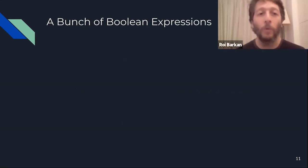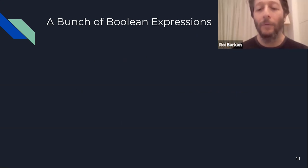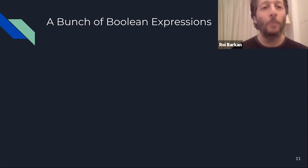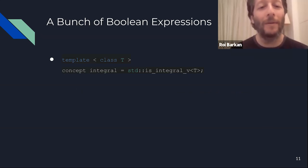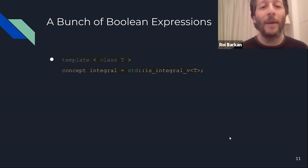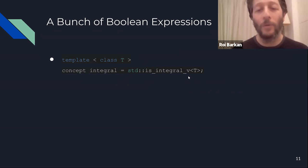Throughout the rest of this talk, we'll go one by one into these three traits of concepts. Boolean expressions first: how are they defined for a concept? The most basic way is to define a concept on a single class T by setting it equal to some Boolean value. For example, is_integral<V> is a Boolean value we had in C++11 or earlier, and this way I just create a concept out of it — very simple, very naive.